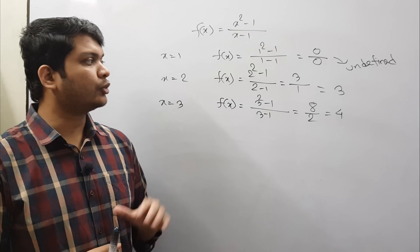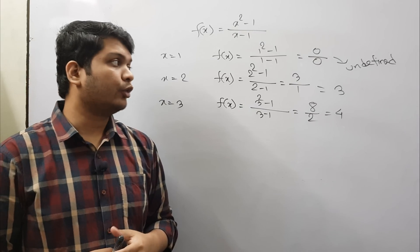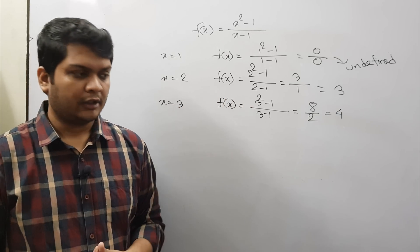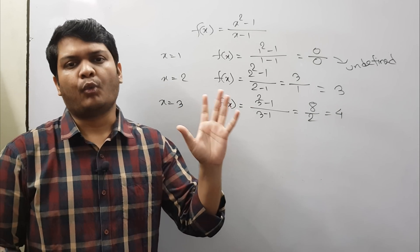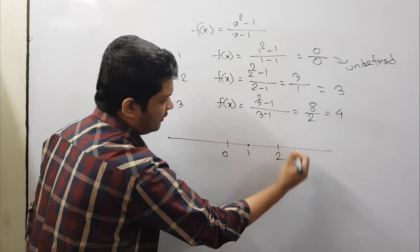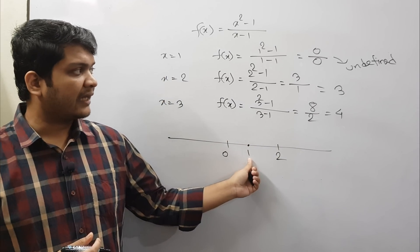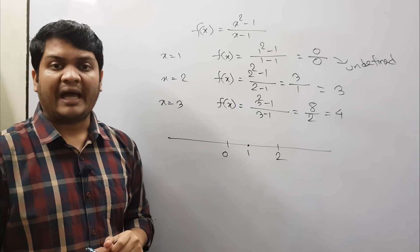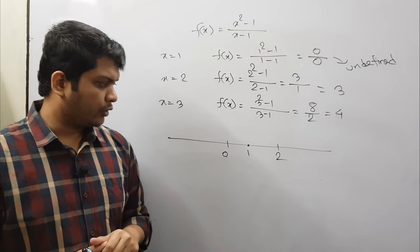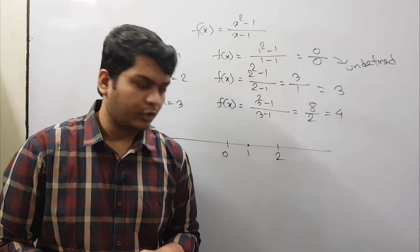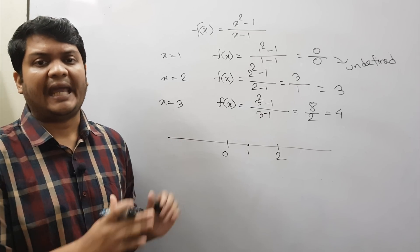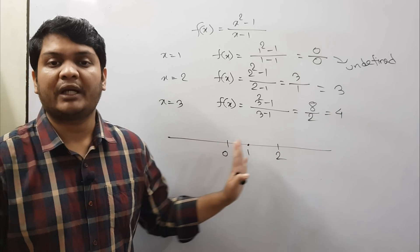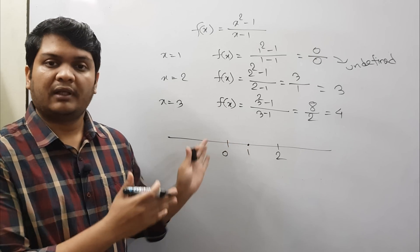Mathematicians found a way to calculate this value — we'll now look into that procedure. Since we cannot put x = 1 directly, we will try to put values which are close to 1. We have two options: we can start with values less than 1 and gradually increase, or start with values greater than 1 and gradually decrease. So we'll have two different ways to calculate the values.